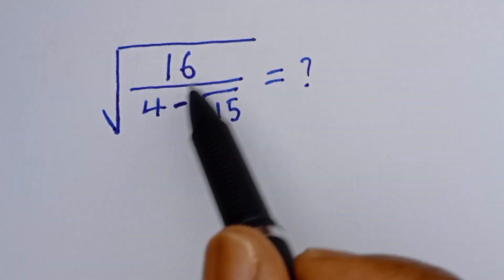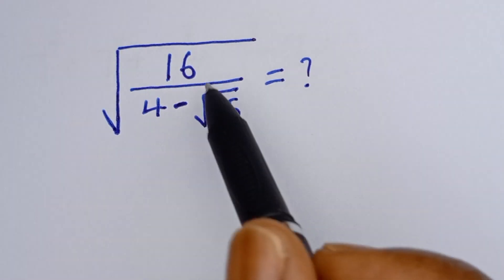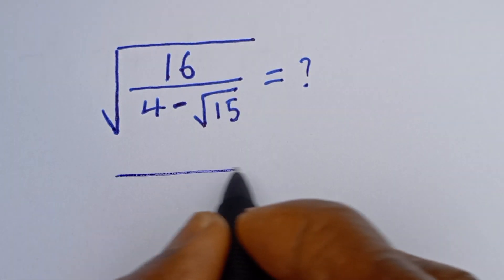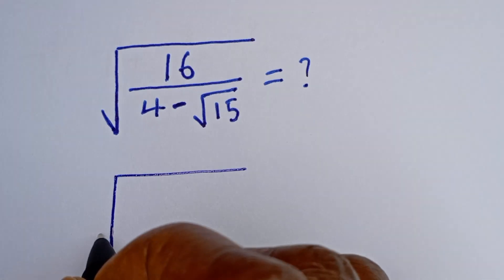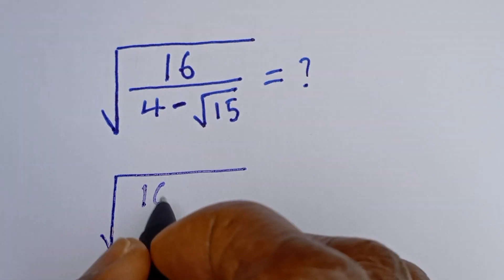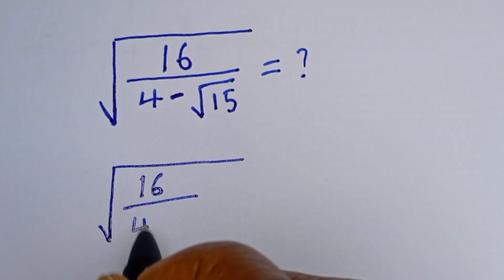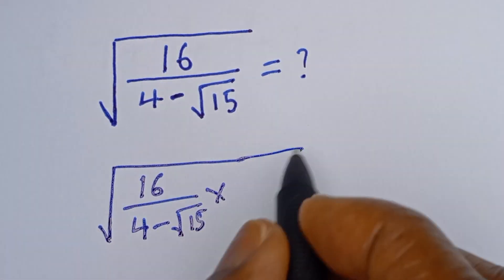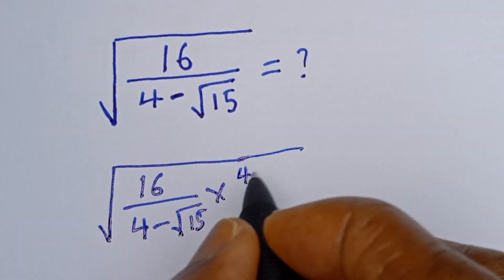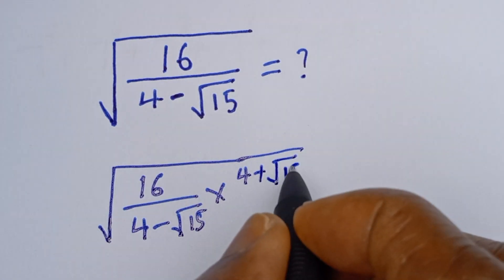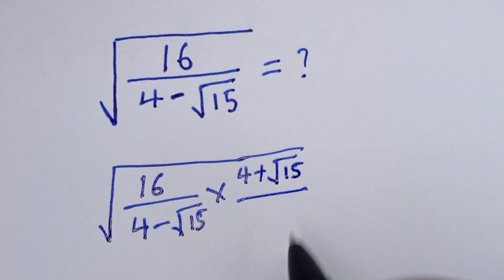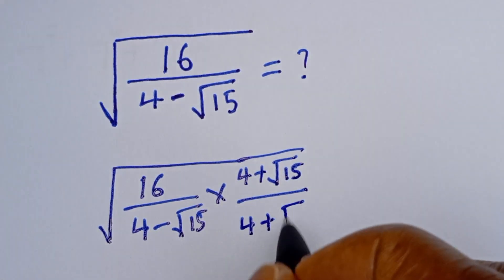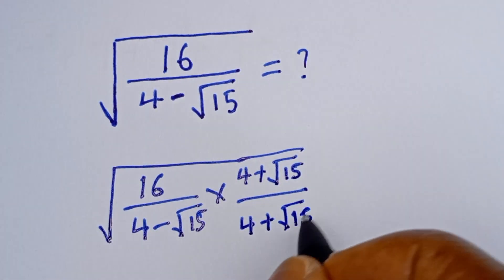Now here we are going to multiply both the numerator and denominator by the conjugate of this denominator. That is, we have square root of 16 divided by 4 minus square root of 15, multiplied by the conjugate, which is 4 plus square root of 15, over 4 plus square root of 15.